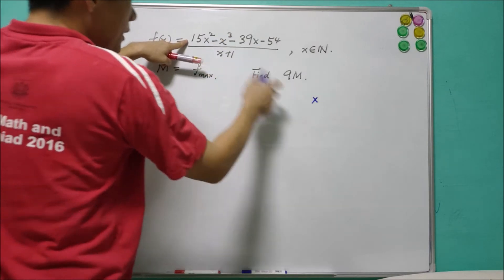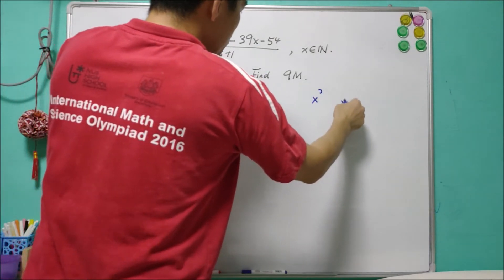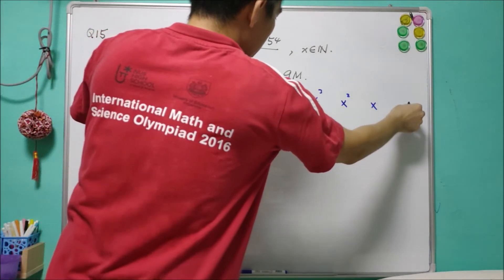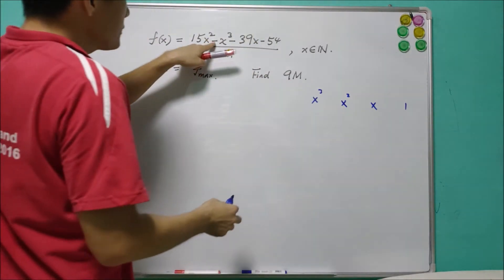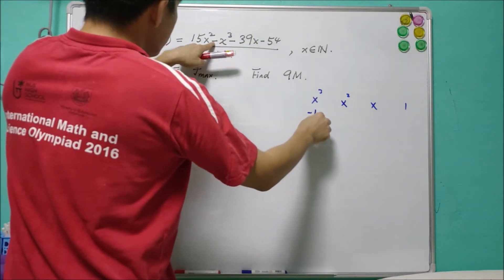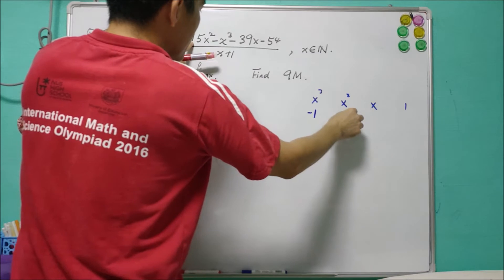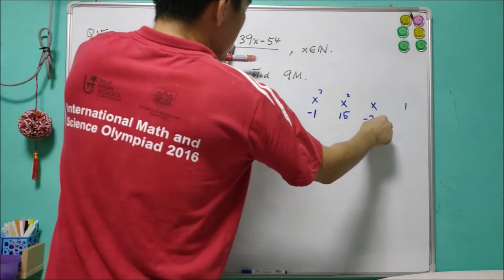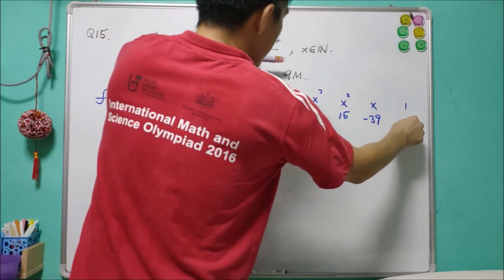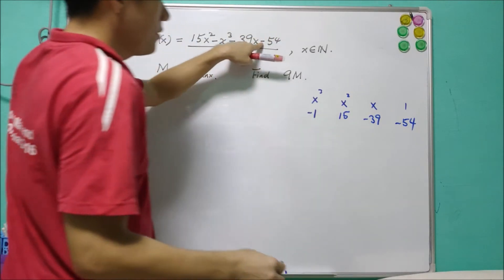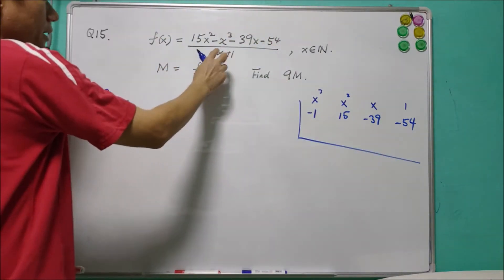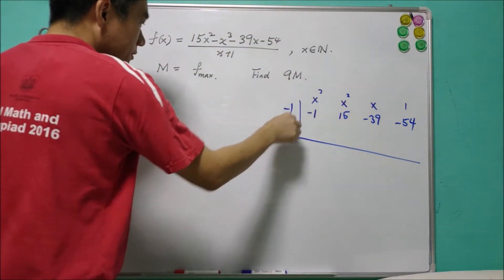Using synthetic division, you have to be very careful: x³, x², x, and constant. For x³ is negative 1, x² is 15, x is equal to negative 39, and constant is negative 54, divided by x plus 1, write as negative 1.